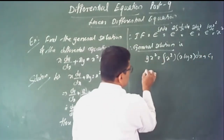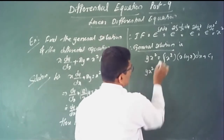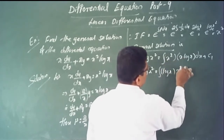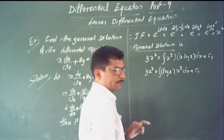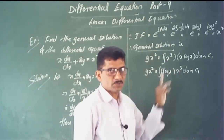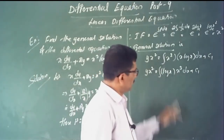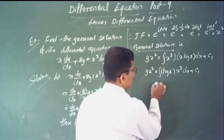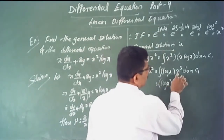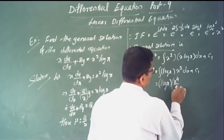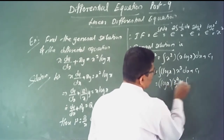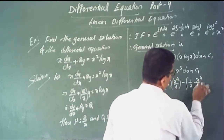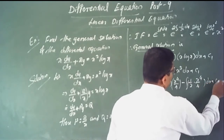Simplifying, y times x squared equals the integral of x cubed times log x dx plus constant. This is a product of two functions, so we use integration by parts, where the logarithm function is the first function and the algebraic function is the second. The first function is log x; the integral of x cubed is x to the 4th divided by 4.